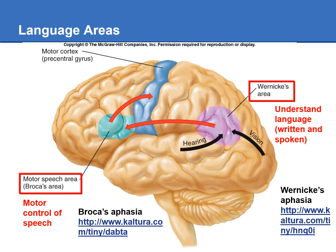Here are some videos if you want to look at people who have had strokes affecting these brain areas. The one on the right shows Wernicke's aphasia — this man had a stroke affecting Wernicke's area. You'll notice when he speaks, his words are clear and fluent, but when he's talking he doesn't make a lot of sense.